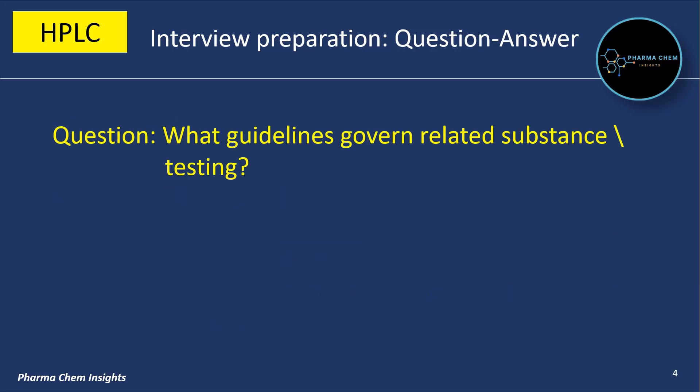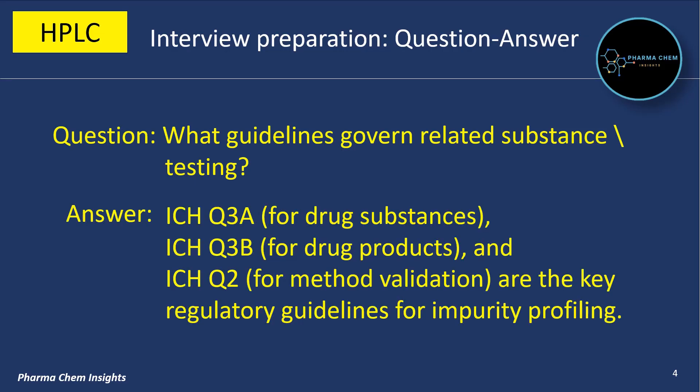Next question: what guidelines govern related substance testing? ICH Q3A for drug substances, ICH Q3B for drug products, and ICH Q2 for method validation are the key regulatory guidelines for impurity profiling in related substance testing.